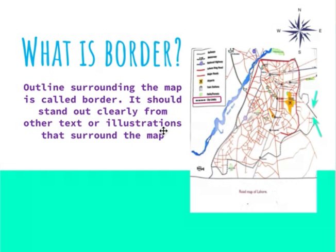What is Border? The outline surrounding the map is called a Border. It should stand out clearly from other text or illustrations that surround the map. You see this line — it's the city limits, it's also the border. The city limits of a city is the border of the city. This is a road map of Lahore, so this is the border of Lahore.